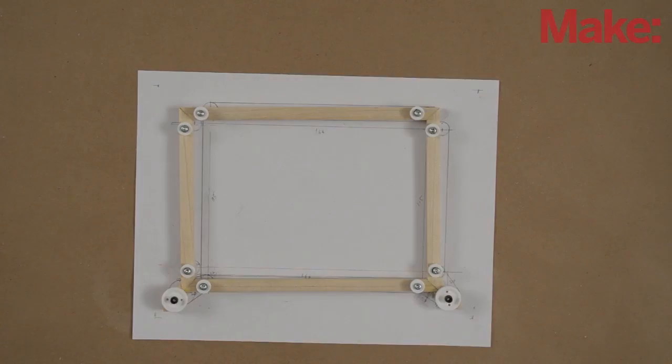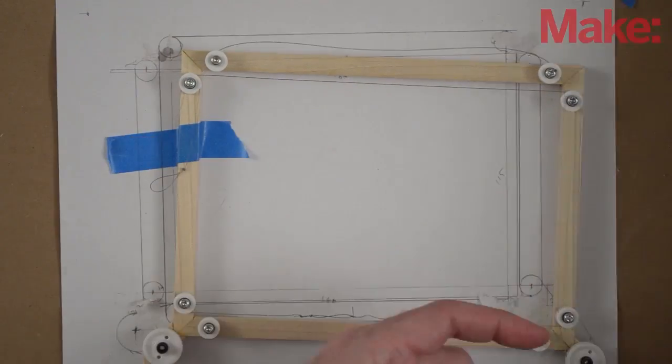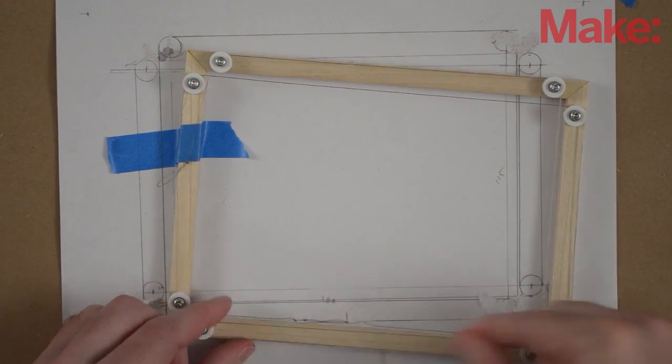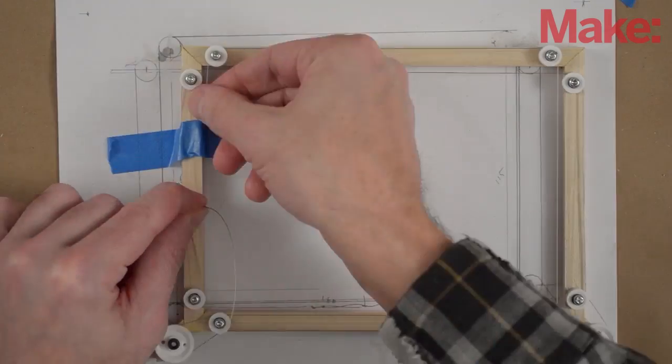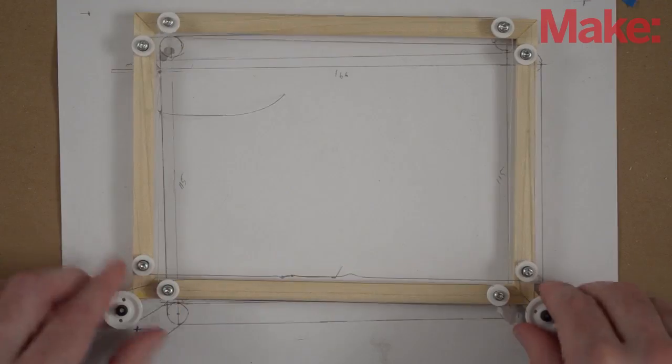With the axles in place, it's time to string it up. I use fine stranded steel beading wire as the cabling because it's strong, flexible, and won't stretch. To help transmit the power from the knobs, I wrap it around the control pulley several times to keep it from slipping.